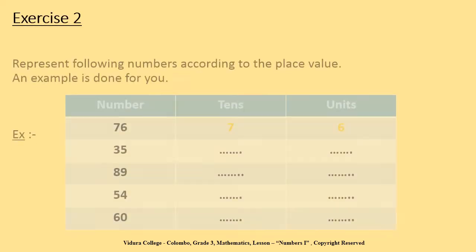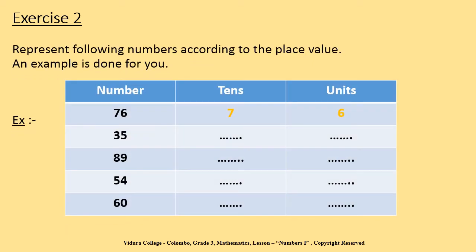Exercise 2: Represent the following numbers according to the place value. An example is done for you. Children, look at the table given below. They have represented number 76 using tens and units — so in 76, there are seven tens and six units. Let's represent the rest of the numbers according to their place value by looking at the example.